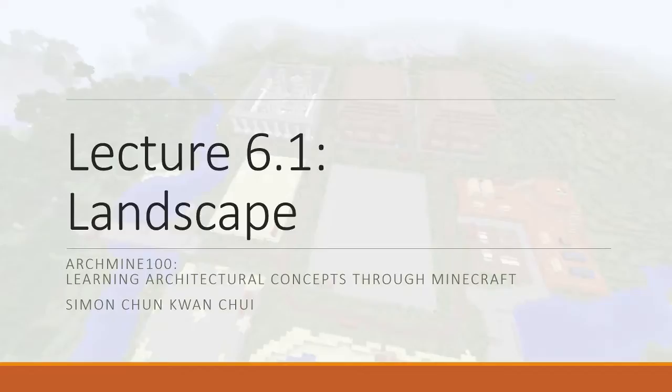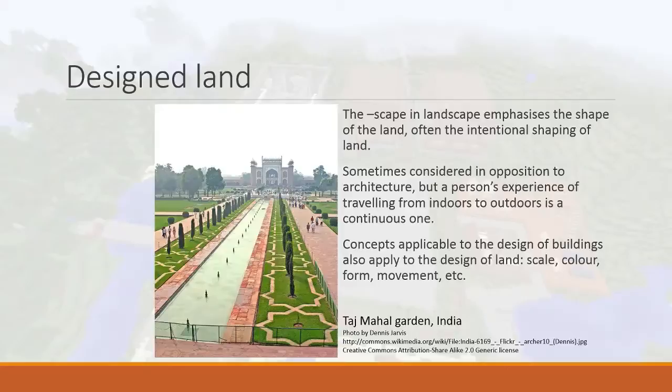Hello everyone, Simon here, and welcome back to our Archmine 100 series where we are learning architectural concepts through Minecraft. In the sixth lecture today, we're going to talk about landscape. In terms of architecture and design, landscape means designed land. The 'scape' part of landscape emphasizes the shape of the land — so 'scape' means the shape.